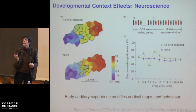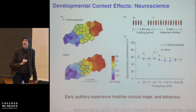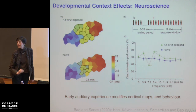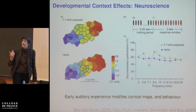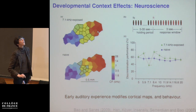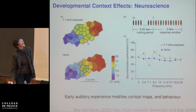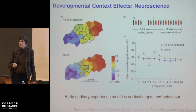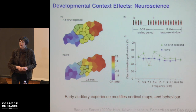There are two maps shown: one for an animal raised with continual exposure to 7.1 kHz beeping sounds, and another for an animal raised without any abnormal exposure. You can see that the region of the cortical map devoted to sounds at 7.1 kHz has expanded in the animal that was exposed to those sounds repeatedly during development.